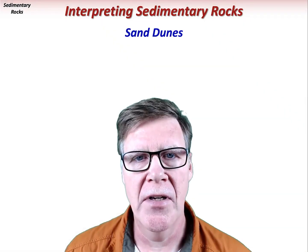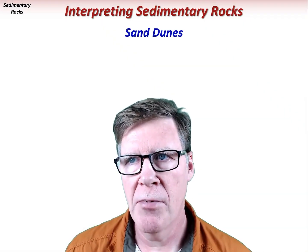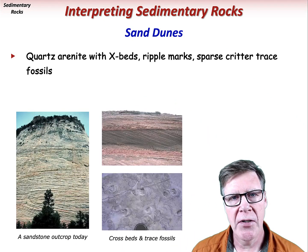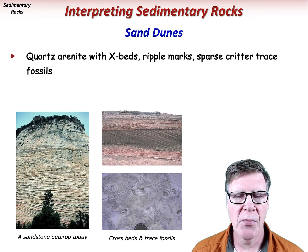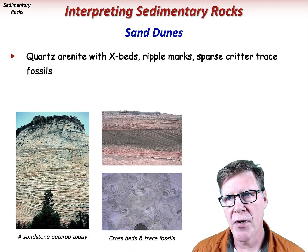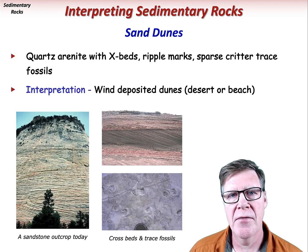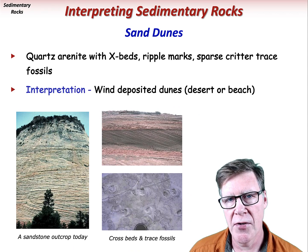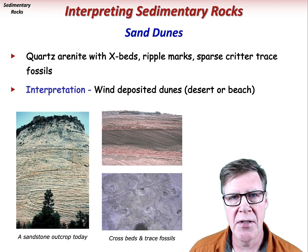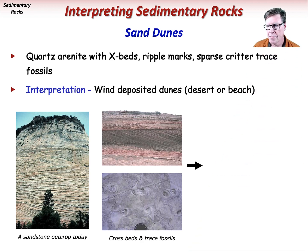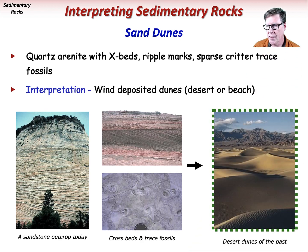Continental sand dune environments are commonly represented by quartz arenite. Sand dune rocks typically include crossbeds, ripple marks, sparse critter trace fossils, etc. The interpretation of these sedimentary rocks and structures is wind deposition in desert or beach sand dunes. Desert sand dune rocks of today help us reimagine desert sand dunes of the past.